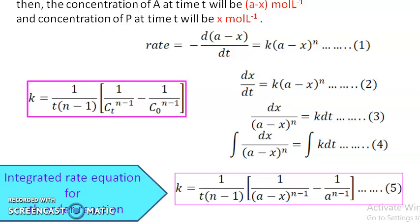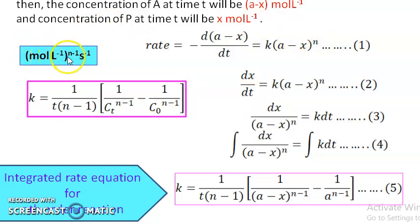From this expression we can arrive at the general equation for the unit of the rate constant K, which is: mol·L^(−1) raised to (N−1) times second raised to (−1). This general expression for the unit of rate constant is applicable for all order reactions from 0 to N. However, the integrated rate equation itself is applicable only for reactions with order 2 and above; for orders 0 and 1 you cannot apply this equation.